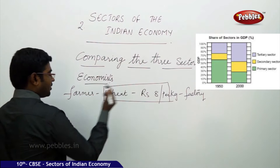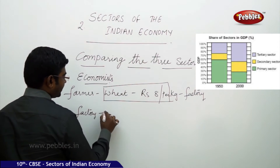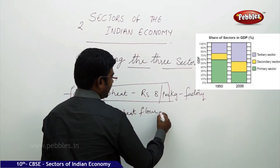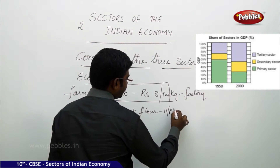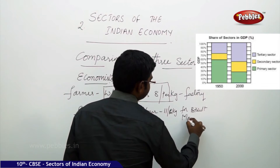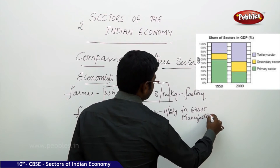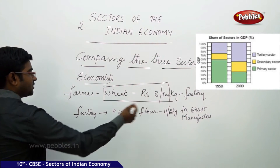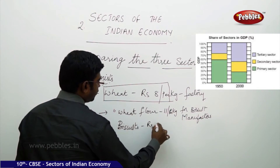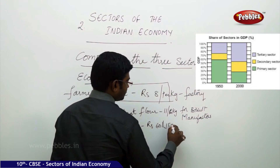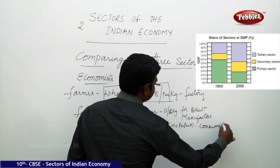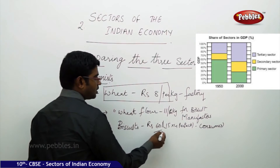Next, from the factory, the wheat is made into flour. So wheat flour is made and sold for Rs. 11 per kg to biscuit manufacturers. Again, the biscuit manufacturer makes biscuits and sells them for Rs. 60 to the consumer. So Rs. 60 is the final product cost obtained from the wheat.